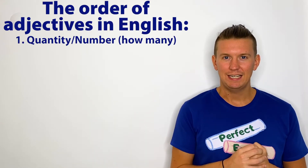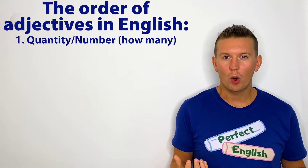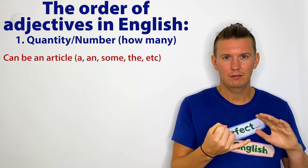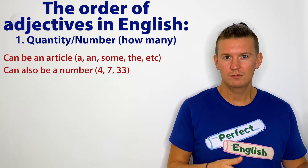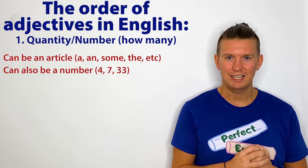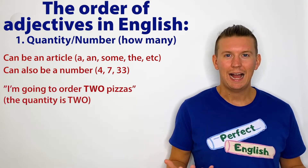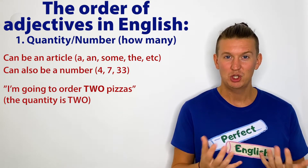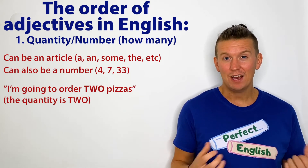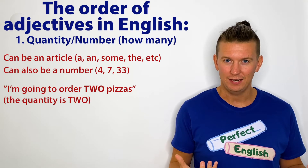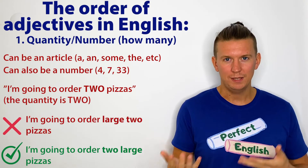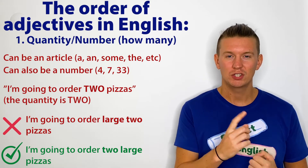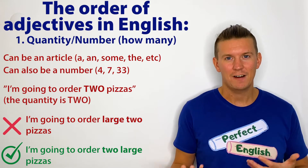The first thing in the adjective order is the quantity — the number. How many of something are there? The quantity can be an article — a, an, some — or it can be a number: four, seven, 33. The purpose of this adjective is to tell us how many of something there are. For example, 'I'm going to order two pizzas.' How many of something always comes first when describing something. Don't say 'I'm going to order large two pizzas.' Do say 'I'm going to order two large pizzas.' Two large pizzas, five bottles of water.